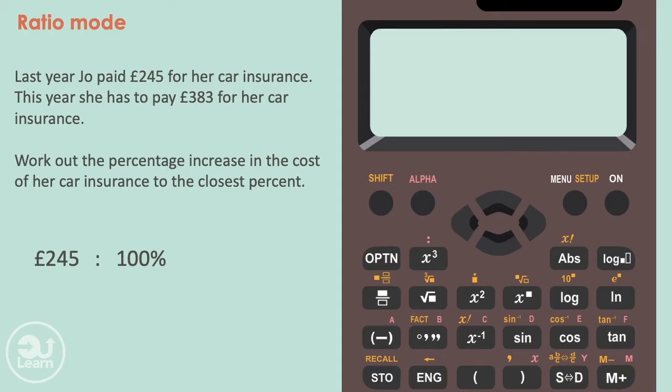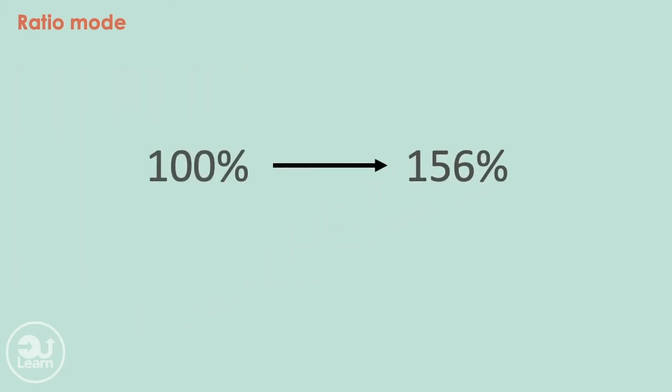Our equivalent ratio would be £383 to the percent we're looking for. Placing this information into our calculator using the second ratio option, we get this long decimal number of 156.326530612% or to the closest percent, 156%. Now we have to think, going from 100% to 156% is an increase of approximately 56%, which is therefore our final answer.